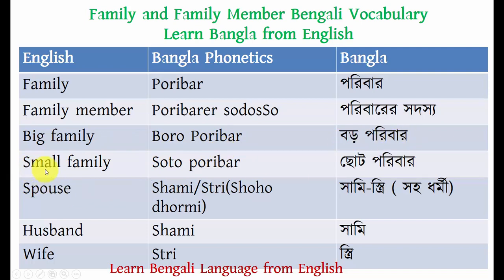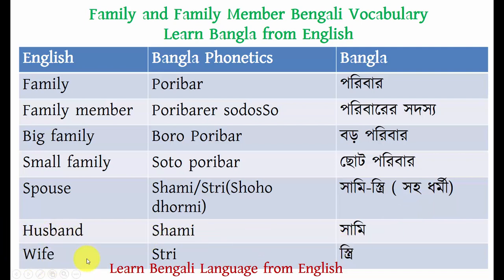On the other hand, 'small family' — small means 'choto,' so small family means 'choto poribar.' Spouse means 'shami or istri,' or you can also say 'shohodhormi.' Husband means 'shami' and wife means 'istri.'